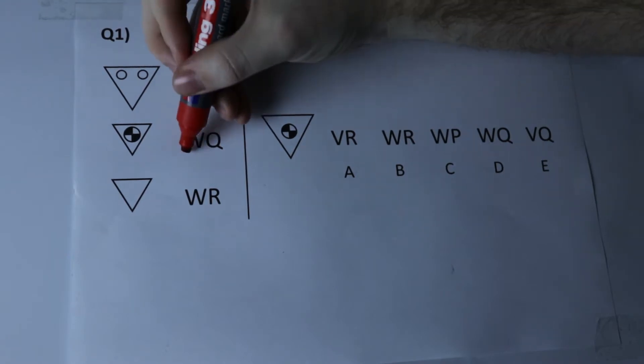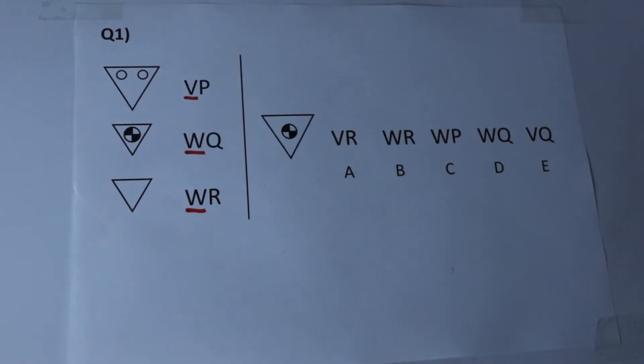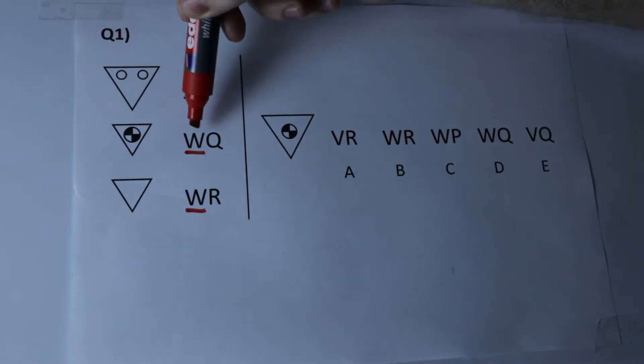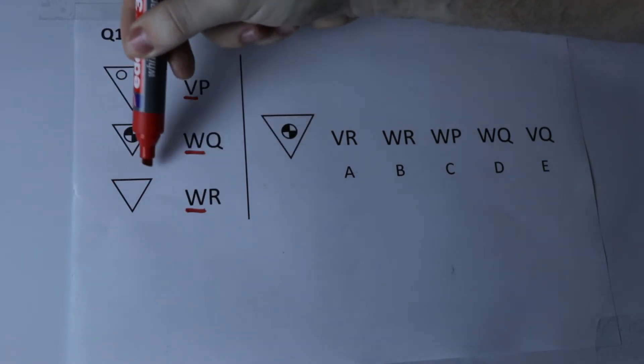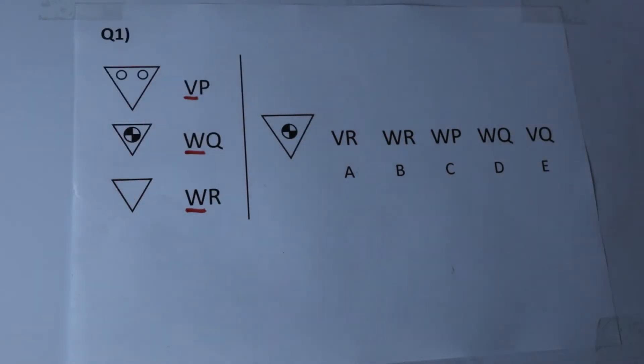We're going to look at the first letter to begin with, V, W and W. And what we've got to do is try and match up a feature of the shapes on the left hand side with a letter in this code. V means something in this shape, W means something in this shape and W again means the same thing must be going on in this shape. So we've got to ask ourselves what's the same and what's different.